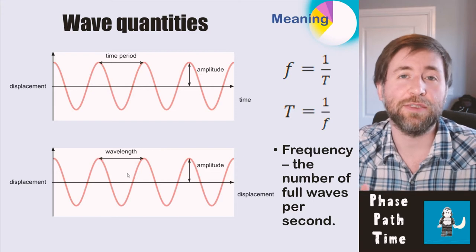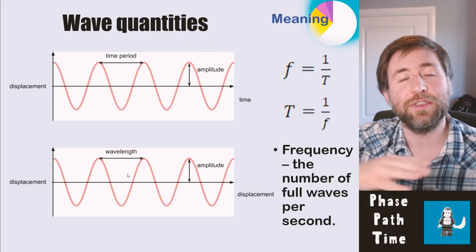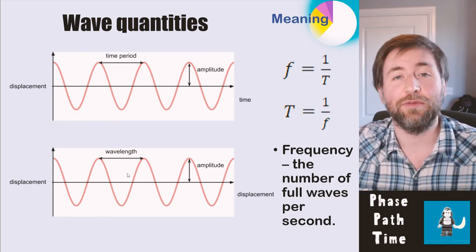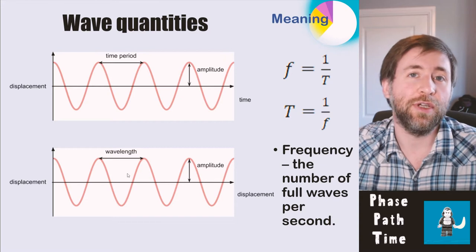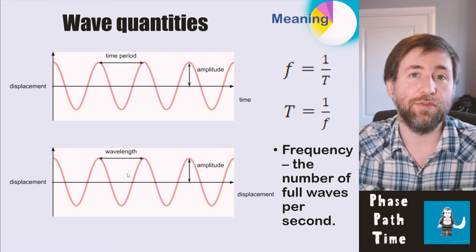The top one is a graph of displacement versus time. So it shows you how an individual particle behaves as time goes on. And the bottom graph is a graph of displacement versus displacement. So it shows you how the displacements of the particles in a way vary as you move through space.